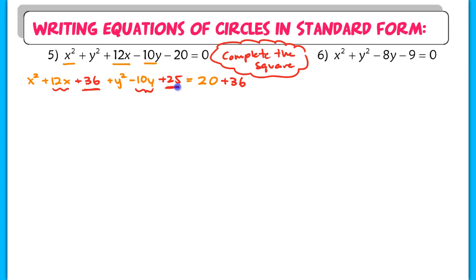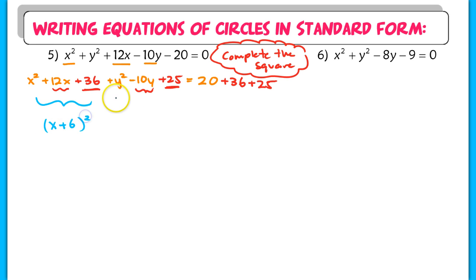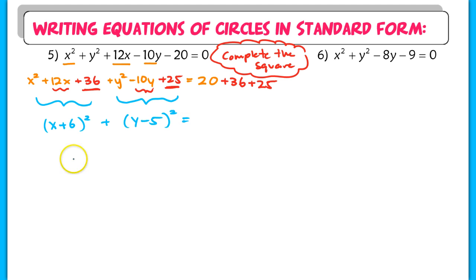Make sure you balance the equation on the other side. Students sometimes forget this and then things don't make sense when graphing. The whole point of completing the square is to create perfect squares. Factor the x terms into (x plus 6) squared, and factor the y terms into (y minus 5) squared. Add all the terms on the right to get 81. That's r squared.